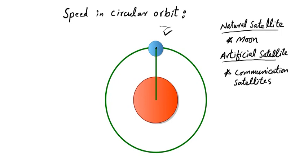To learn how to calculate satellite speed, let's say this is the satellite — we call it mass of the satellite (ms) — and this is the Earth, with mass of the Earth (Me). The distance between these two bodies will be R.